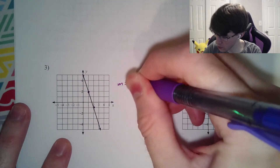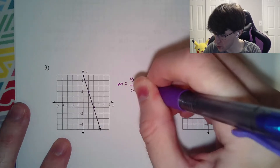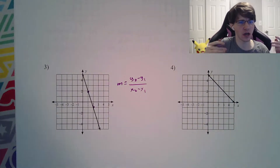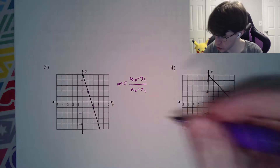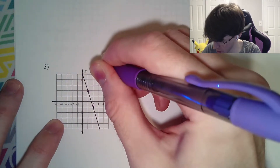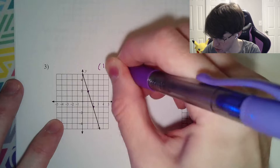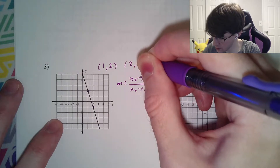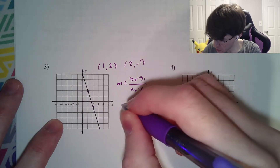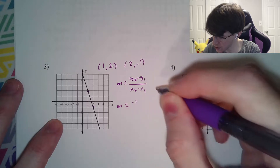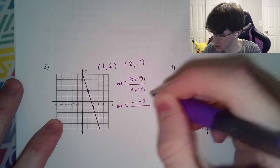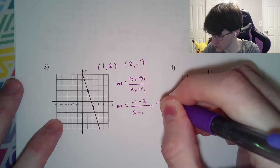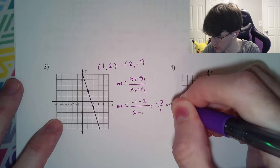Our formula is y2 minus y1 over x2 minus x1. We started at coordinate 1, 2, and we can also say the second coordinate down there is 2, negative 1. So our slope is negative 1 minus 2, divided by 2 minus 1. We get negative 3 over 1, which is just negative 3.